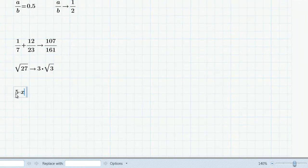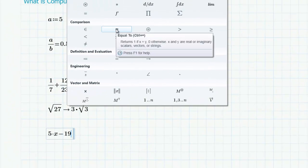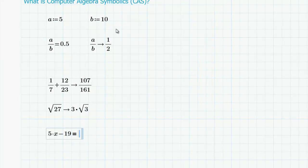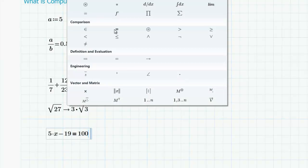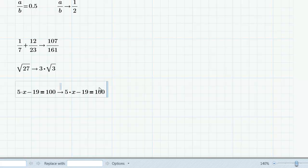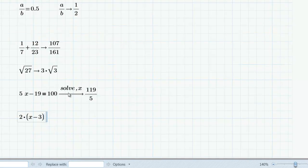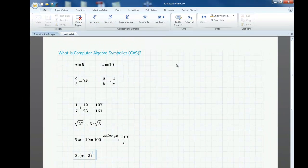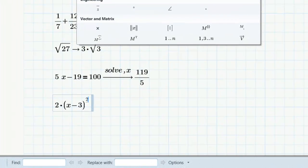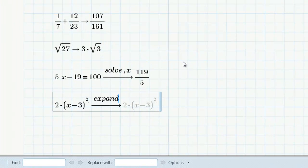Moving into algebra, if I have an equation like 5x minus 19 and I want to express that as an equation using the equal to comparison operator, and I say that's equal to 100, I can evaluate that symbolically and ask MathCAD to solve it for x, and it'll tell me what the result is. I can take an expression like 2 times the quantity x minus 3, and then I want that raised to the second power, and then I will evaluate it symbolically but ask for it to be expanded. MathCAD will produce the quadratic polynomial.